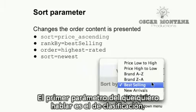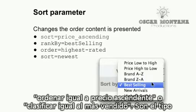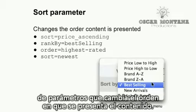The first parameter I'd like to cover is the sort parameter. It's a fairly complicated parameter and setting. The sort parameter is something like sort equals price ascending, or rank by equals best selling — any of these types of parameters that just change the order that the content is presented. These are sort parameters.